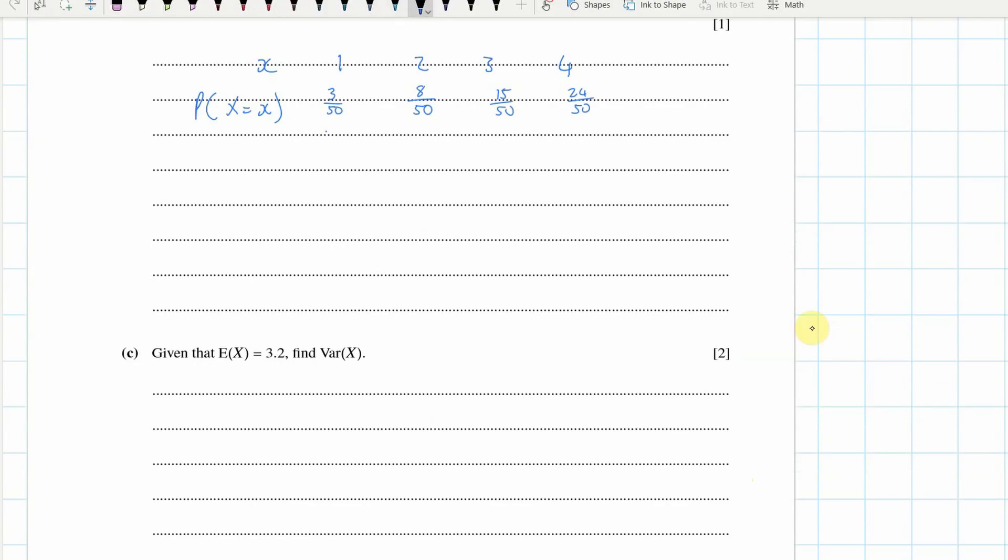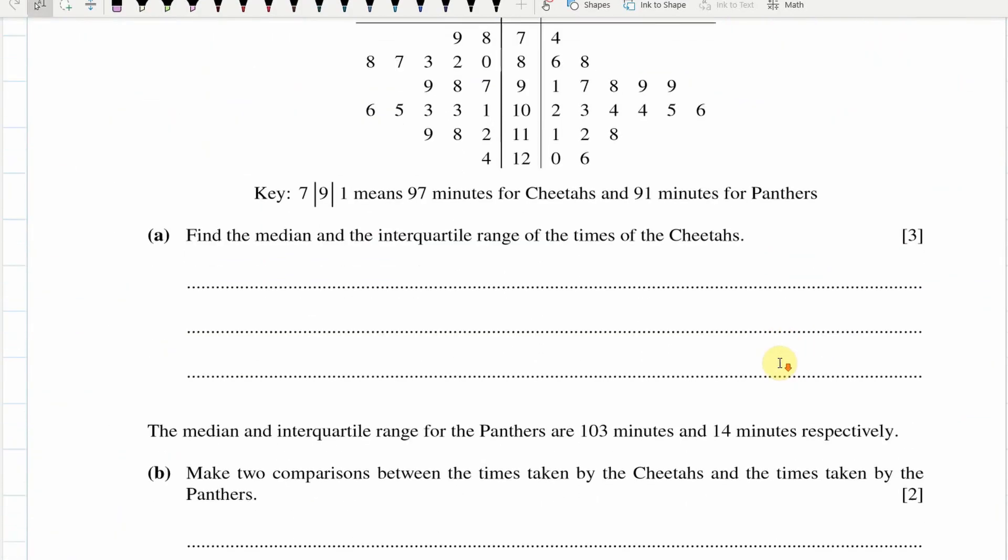And now we're going to do var x. Okay, so var x, we will square those values and multiply them by the probability. So 1 squared times 3 over 50, plus 2 squared times 8 over 50, plus 3 squared times 15 over 50, plus 4 squared times 24 over 50. So we've got to do that, then take away x squared. They've helpfully given that to us. When I chuck this on my calculator, I was getting 21 over 25.